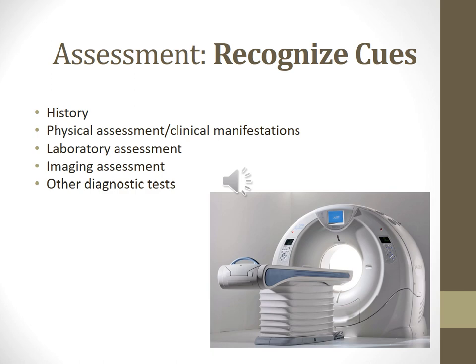Physical assessment and clinical manifestations: Signs and symptoms of acute renal failure are related to the buildup of nitrogen waste (azotemia) and the underlying cause. Signs of pre-renal azotemia are hypotension, tachycardia, decreased urine output, decreased cardiac output, and lethargy. Intrarenal acute renal failure usually occurs with damage to the glomeruli, interstitial tissues, or tubules. Signs include oliguria — a decrease in urine output — or anuria, which is absent urine.